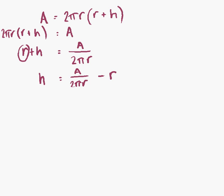We now have H as the subject of our formula. H equals A over 2 pi R minus R, and that's our final answer.